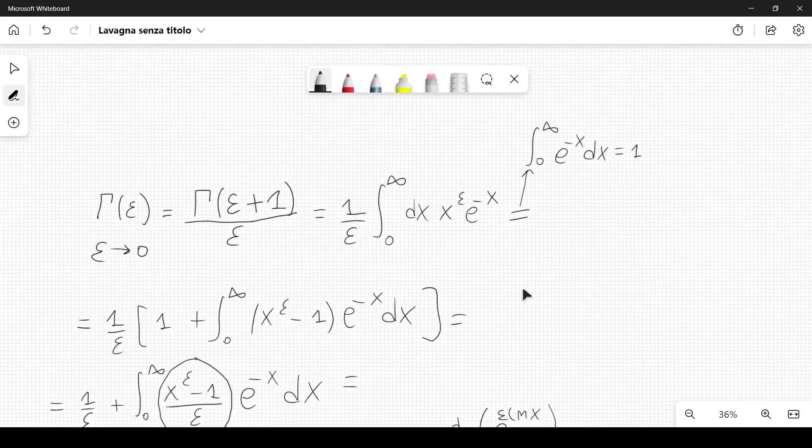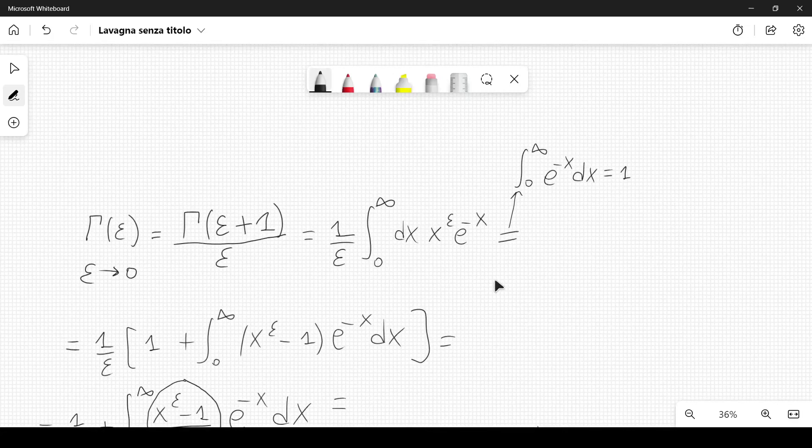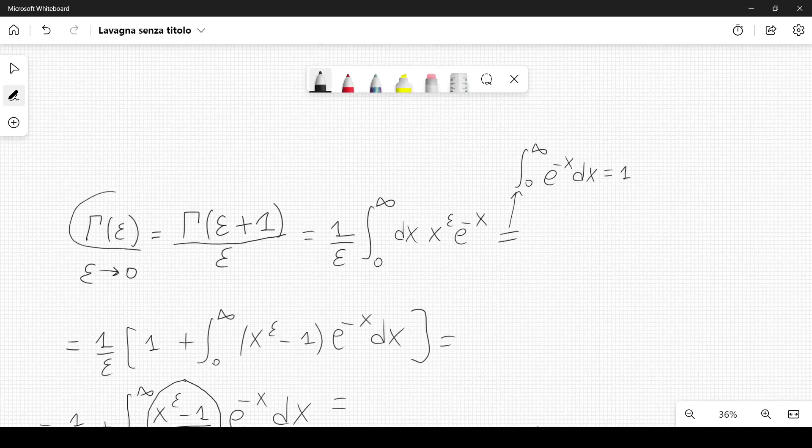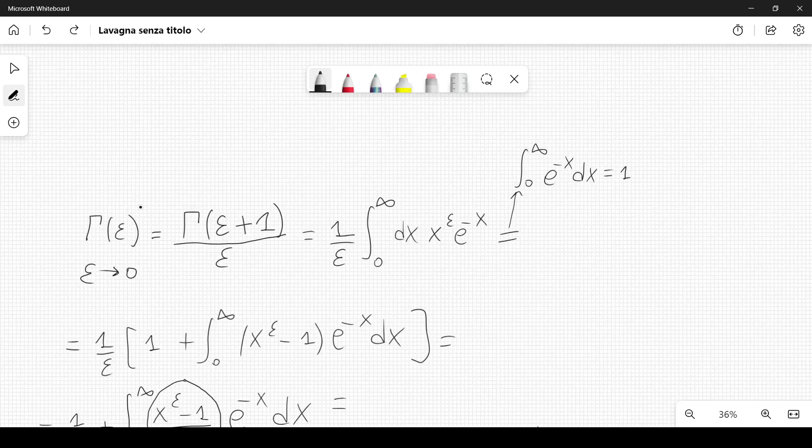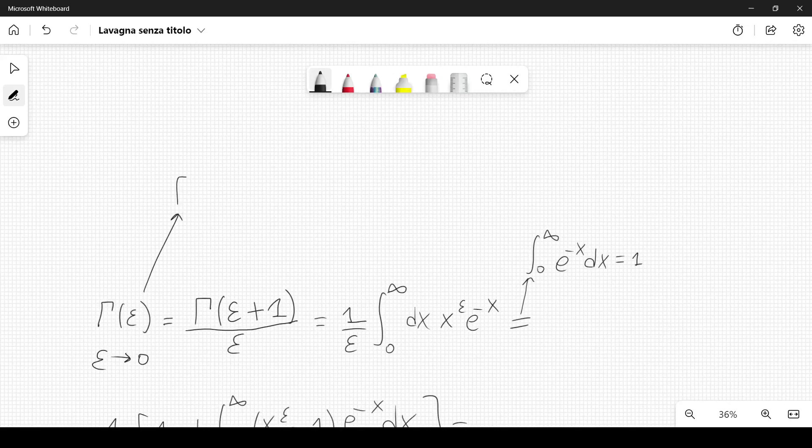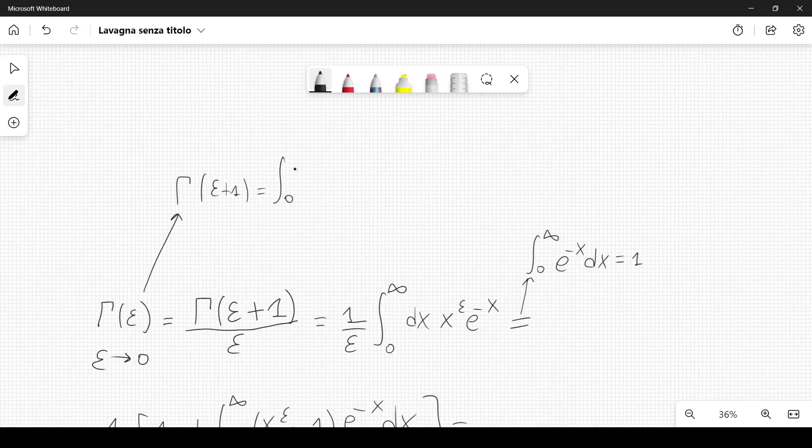This property is very easy to prove. If we start from gamma of epsilon plus 1, we have the integral from 0 to infinity of dx, x to the epsilon, e to the minus x.